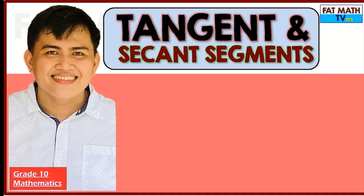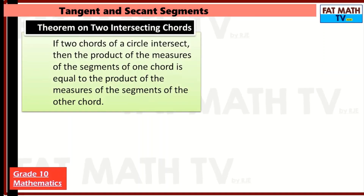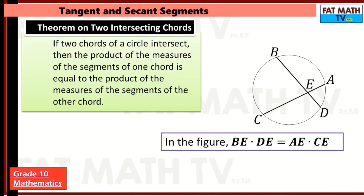Hi everyone. In this video, we will cover tangent and secant segments. We have here a theorem on two intersecting chords: if two chords of a circle intersect, then the product of the measures of the segments of one chord is equal to the product of the measures of the segments of the other chord.